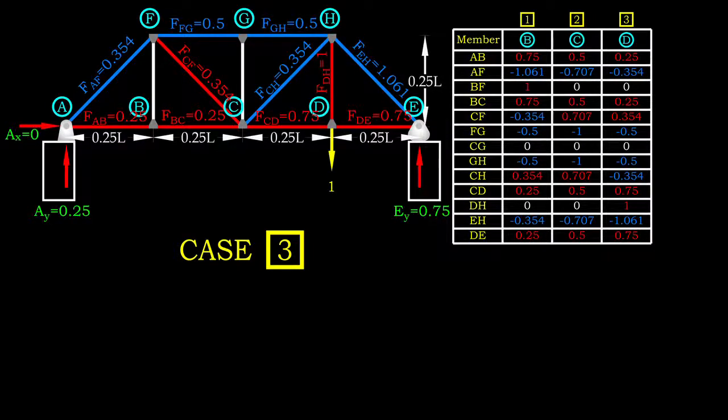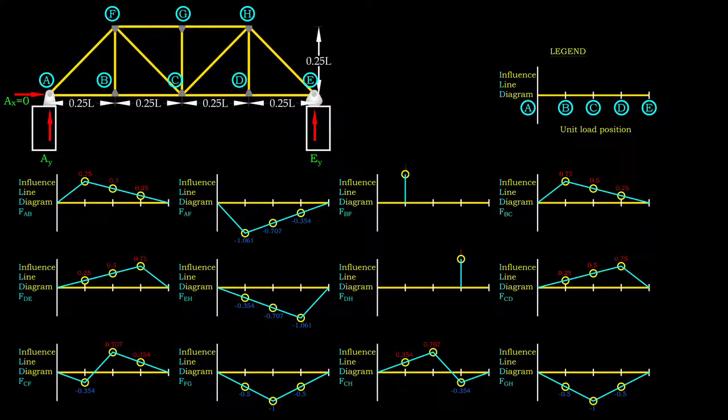Calculation for the third case can be skipped thanks to the symmetrical configuration of truss. After we obtain the member forces for all cases, influence line diagram can be produced by plotting the value of force for respective unit load location.